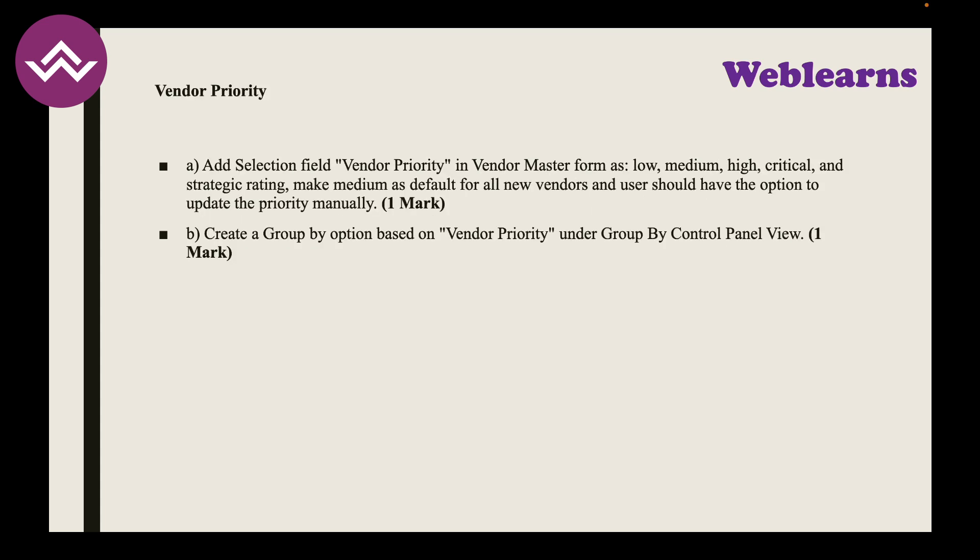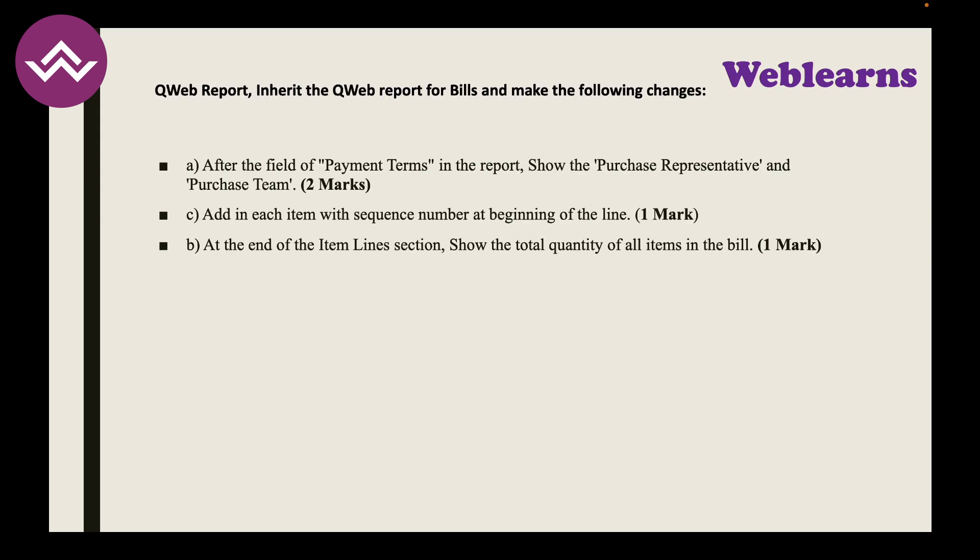Task H: Add a selection field 'Vendor Priority' in the vendor master form with options: Low, Medium, High, Critical, and Strategic. Make Medium the default for all new vendors, and allow users to update it manually — once the field is added in Python and the form, you achieve one mark. The second part is to create a Group By option based on Vendor Priority in the control panel view — once done, one more mark.